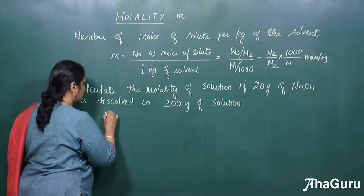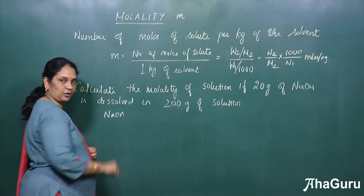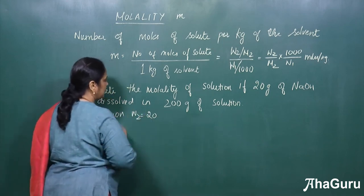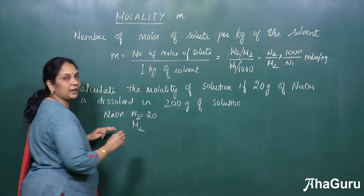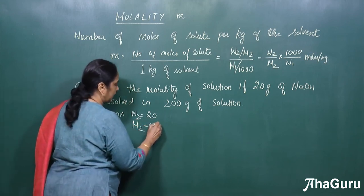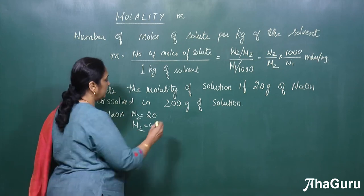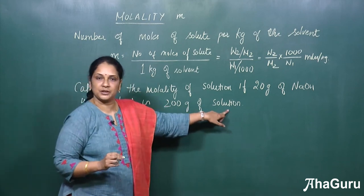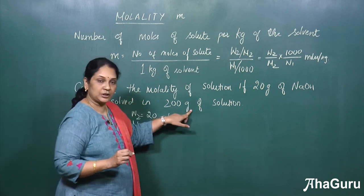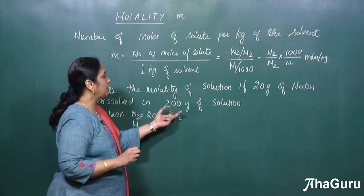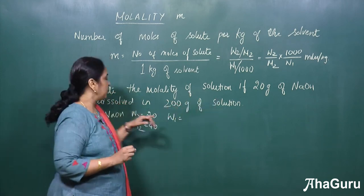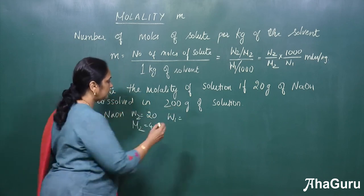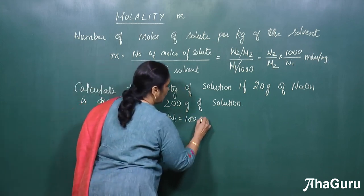What is given for the solute is sodium hydroxide. For this, the weight is given which is W2 which is 20 grams and the molecular weight of the solute, that is sodium hydroxide, is 40. Now with respect to solvent, W1 is equal to, see here, 200 grams of solution is given. So in solution, both solute and solvent is there. Now we have to remove the solute part. So solute is 20 grams and we have to subtract from this 200 grams. So this would be equal to 180 grams.